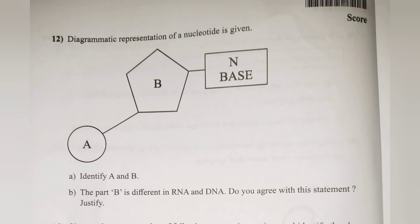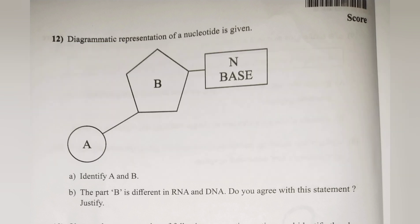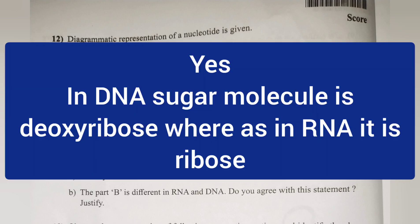Question 12: A diagrammatic representation of a nucleotide is given. a. Define A and B. Answer: A — Phosphoric acid or phosphate. B — Sugar (pentose sugar: ribose or deoxyribose). b. The part B is different in RNA and DNA. Do you agree? Justify. Answer: Yes. In DNA the sugar molecule is deoxyribose, whereas in RNA it is ribose.